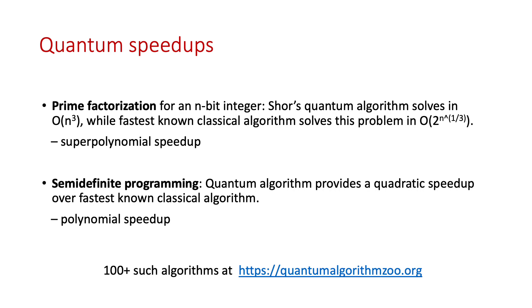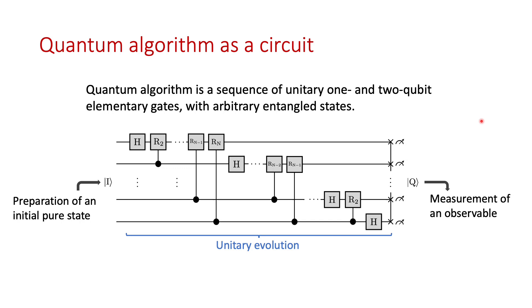In order to demonstrate such supremacy, various quantum algorithms were developed. Two important examples are prime factorization, where Shor's quantum algorithm had a super-polynomial speedup over its classical counterpart, and an important class of optimization called semidefinite programming, where a quantum algorithm showed a quadratic speedup. At the heart of such quantum algorithms is a quantum circuit implemented in a quantum processor — an ordered sequence of unitary gates or matrices performed on qubits, where a qubit is a quantum version of a bit.